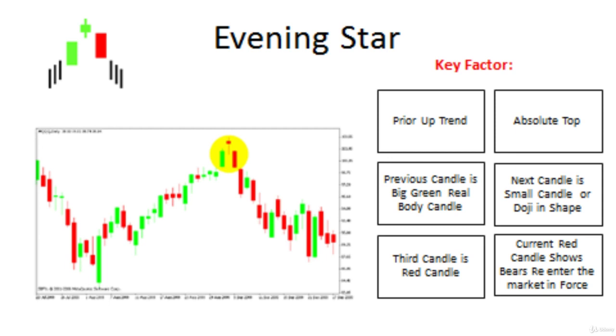Now we discuss another pattern: the evening star. As the candlestick formation shows on your screen, there is a pair of three candles. One candle is a green real body candle. The next candle is a small candle or doji in shape, which also creates an absolute top. And the third candle is a big red real body candle.